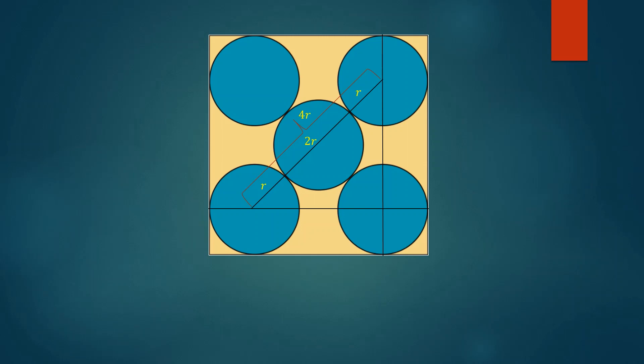As discussed, the triangle is a right isosceles triangle. Let the other two sides be y. Note that r is 3 root 2.